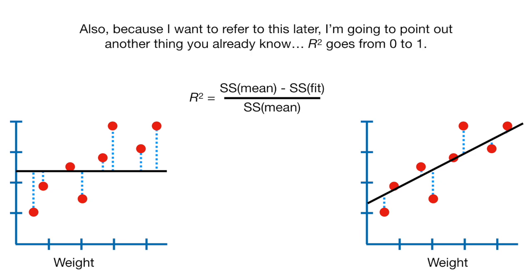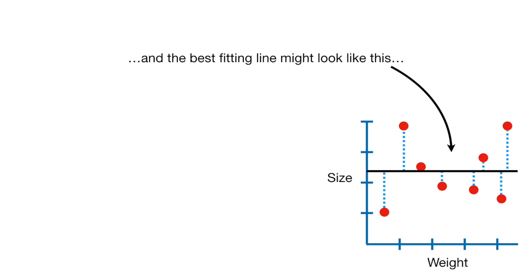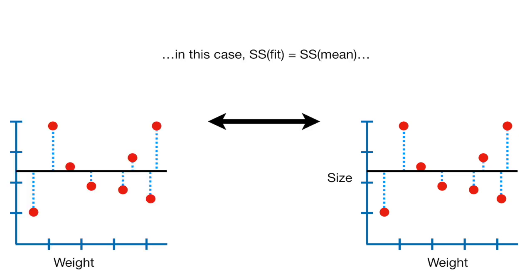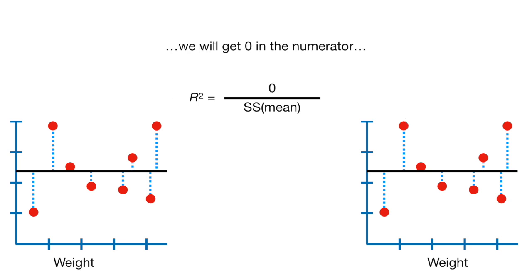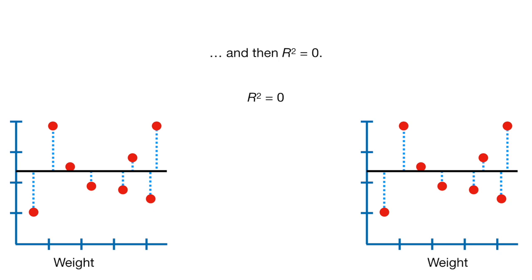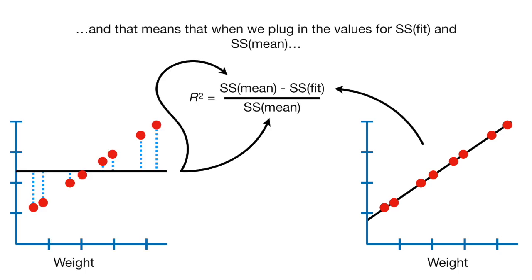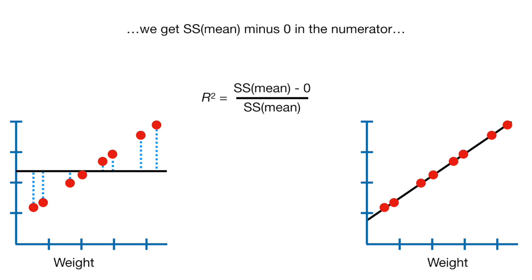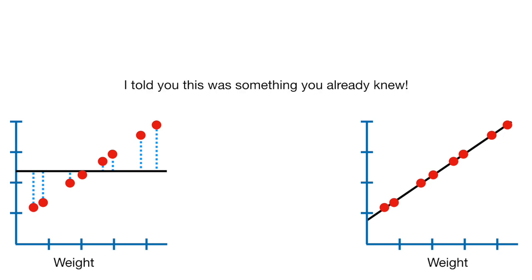R squared is the percentage of variation around the mean that goes away when you fit a line to the data. R squared goes from zero to one. If there wasn't a relationship between weight and size, SS fit equals SS mean, and when we plug in the values we get zero in the numerator and R squared equals zero. And when the fit is perfect, SS mean minus zero in the numerator gives us R squared equals one.